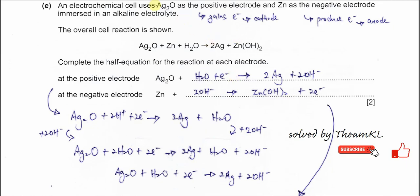Part e: an electrochemical cell uses silver oxide as the positive electrode and zinc as the negative electrode, immersed in an alkaline electrolyte. Before answering, you need to know: the positive electrode gains electrons, making it the cathode. Zinc is the negative electrode, meaning it produces electrons — making it the anode. The overall cell reaction is given.